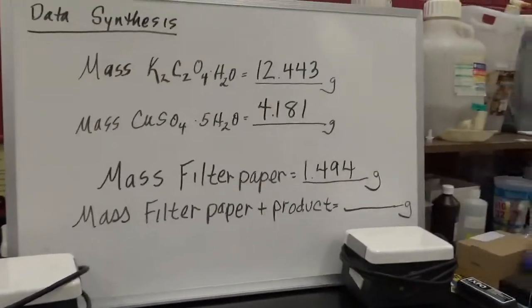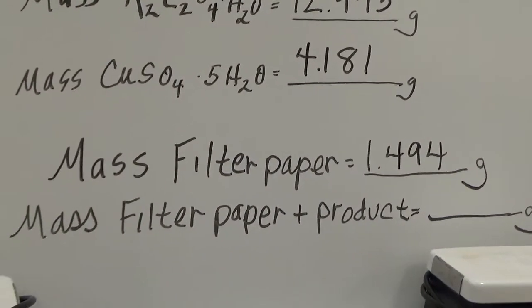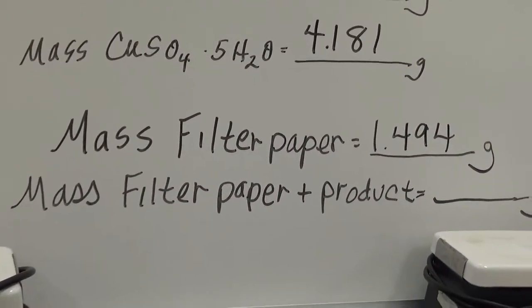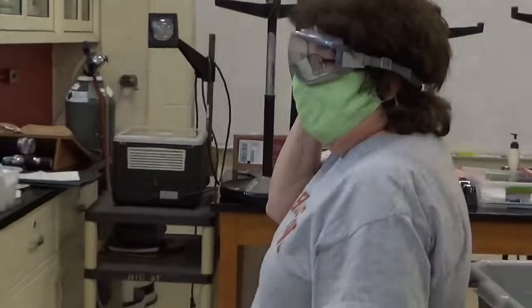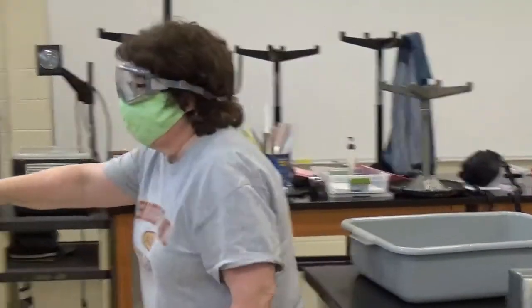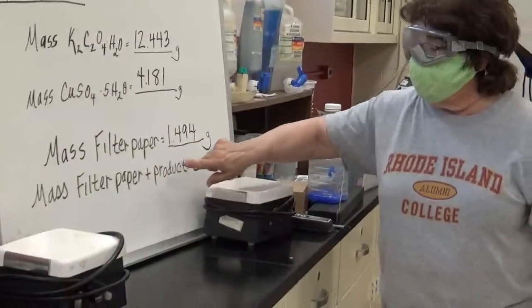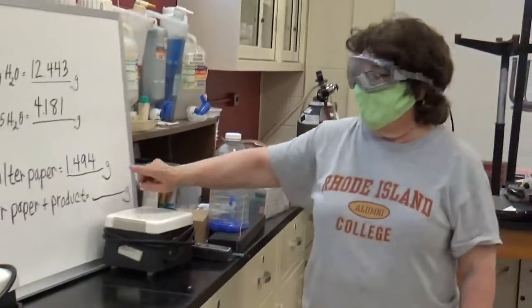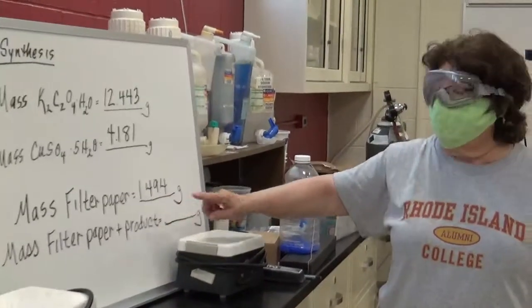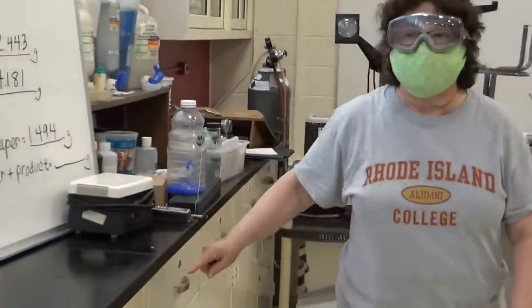Now what's going to happen is we're going to be collecting our product in the filter paper and drying the whole thing next time, and we are going to be writing the total of the filter paper plus product here. And to find the amount of product, all we have to do is subtract these two, and we should be able to get that.